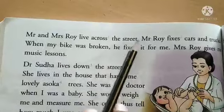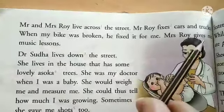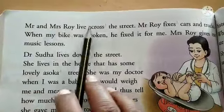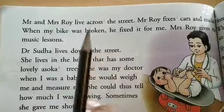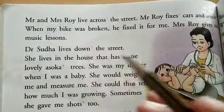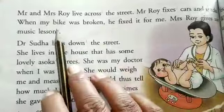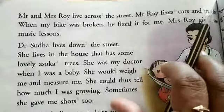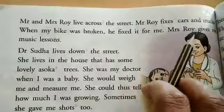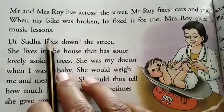Mr. and Mrs. Roy live across the street. Mr. Roy fixes cars and trucks — that means Mr. Roy is a mechanic. When my bike was broken, he fixed it for me. Mrs. Roy gives me music lessons, meaning Mrs. Roy is a music teacher. Across the street means that every colony has a street, and they live on the other side of it.